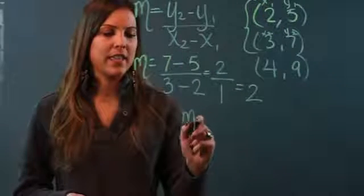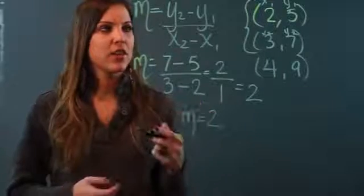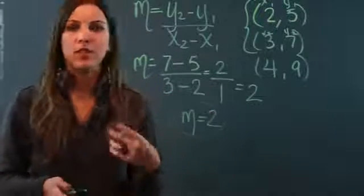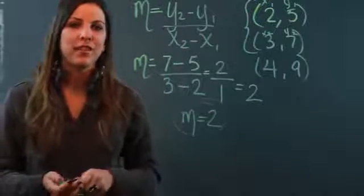And 2 divided by 1 is 2, so my slope is 2. So when you're given multiple points, just pick two of them, use the formula, and that's how you'll find the slope.